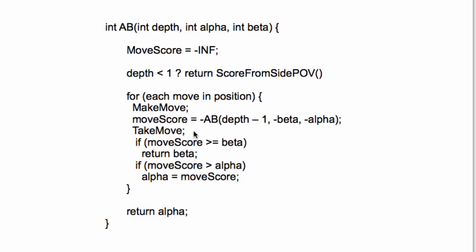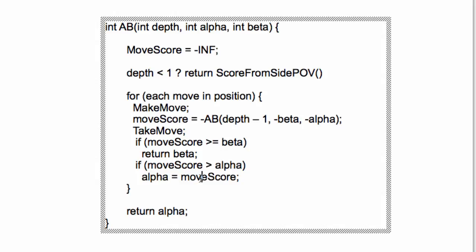And then what you see is, after taking the move, if the move score is greater than or equal to beta, then we have the beta cutoff, like in the example with the tree. And if it's greater than alpha, then we improve alpha, just as we did in the tree. And if we don't get a beta cutoff, then we return alpha.